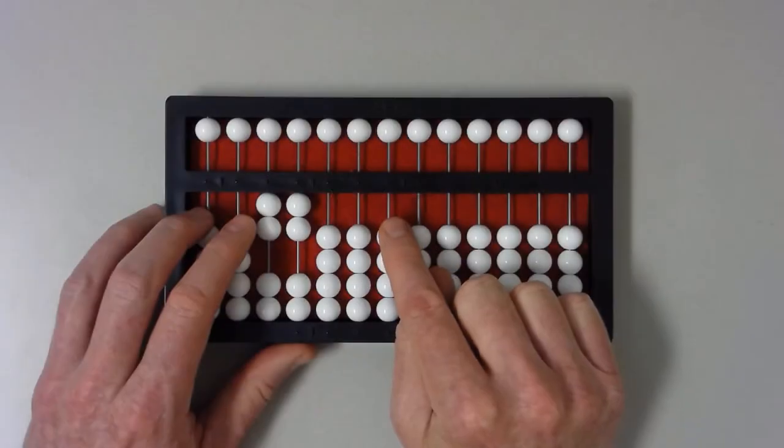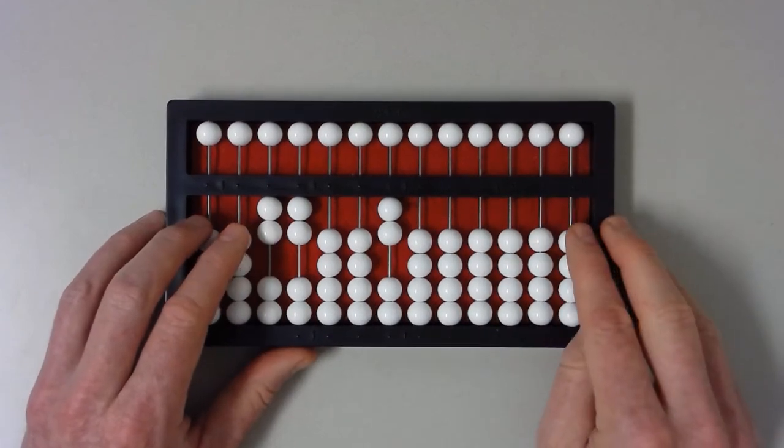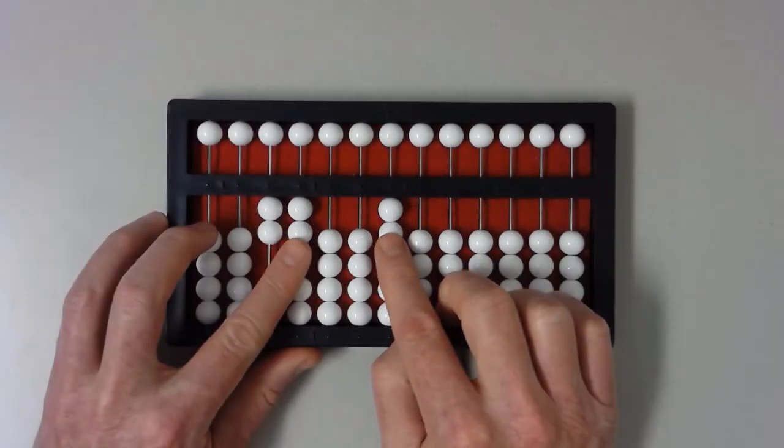Set the multiplier, two, in the millions section by setting two one beads in the ones column. Multiply. Multiply twenty-two times two.